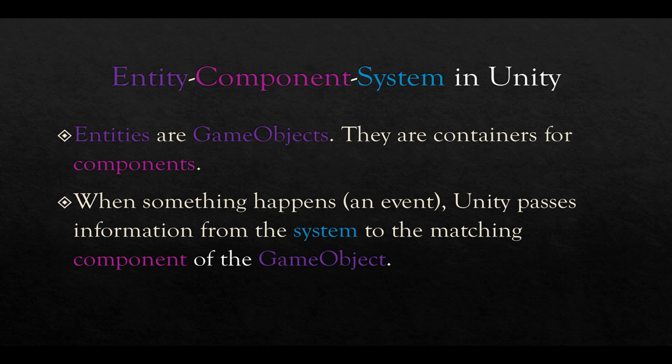When something happens, an event, Unity passes information from the system, again, physics, input, rendering, to the matching component of the game object. So, for example, if two objects, both of which have physics components, overlap, then the physics system would tell the physics components that an event had occurred.